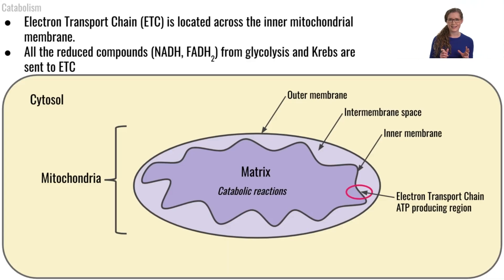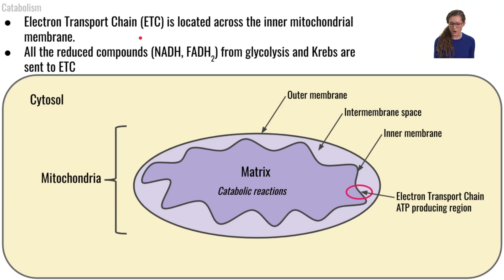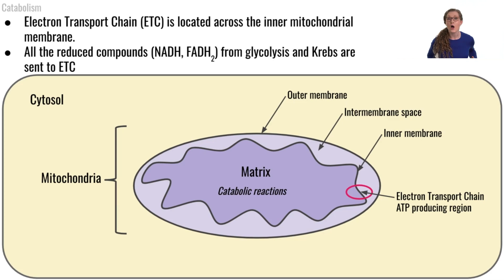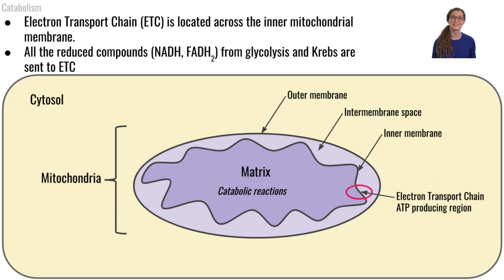Let's start talking about the next steps now. These next steps are called the electron transport chain, abbreviated as ETC. The electron transport chain is located across the inner membrane of our mitochondria. All of those reduced compounds, all the NADHs, all the FADH2s, we are sending them towards the electron transport chain in order to use them to help synthesize energy and ATP.